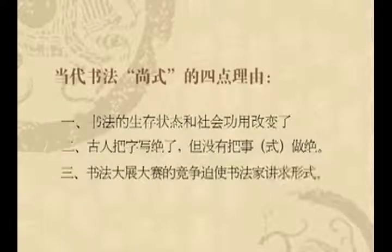第二点：有这么一句话，古人把字写绝了，但是没有把事做绝。我们现在有比古人优越的地方，就是科技发达：我们的制笔、造纸、印刷、墨汁等等，我们的工具材料和其他装饰美化手段都很多，我们的造美能力比古人强。所以那个古人忽略的或者没在意的东西，恰恰是我们这一代书法人可以突破的切入点或者发展空间。古人没有把事做绝，给我们这代书法人留下了发展空间。第三点：书法大展大赛的竞争迫使书法家讲求形式。